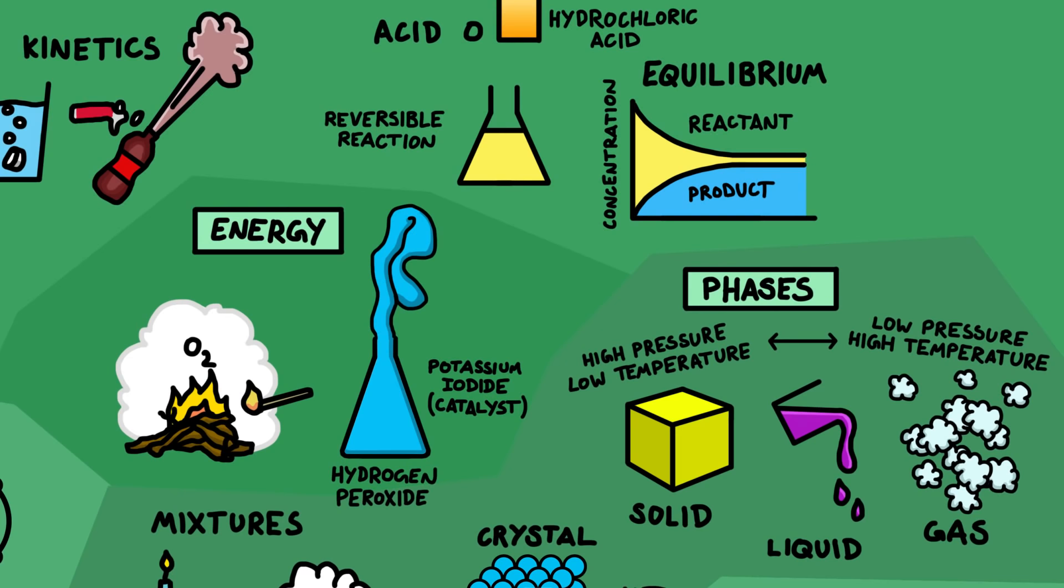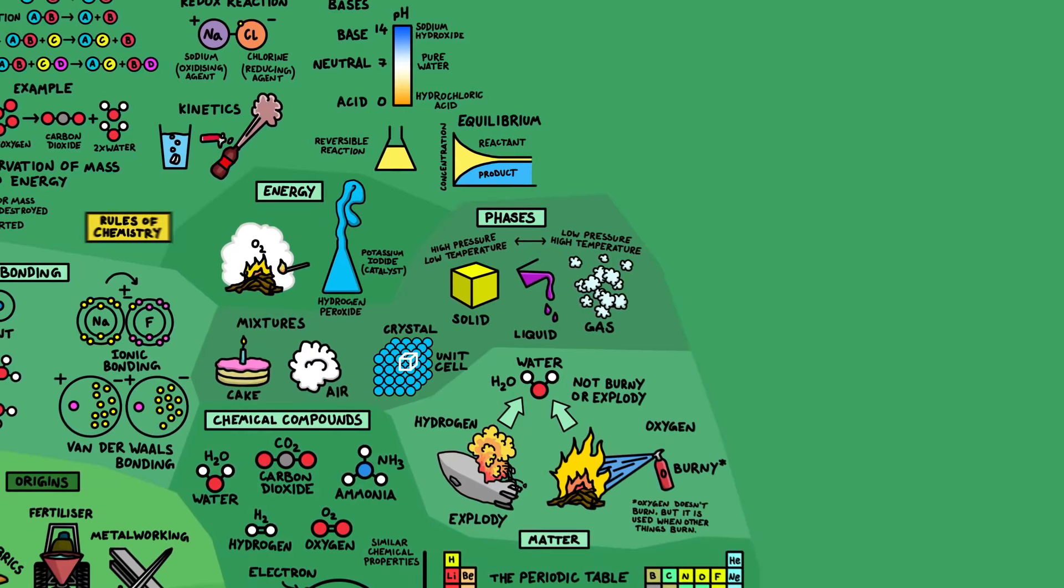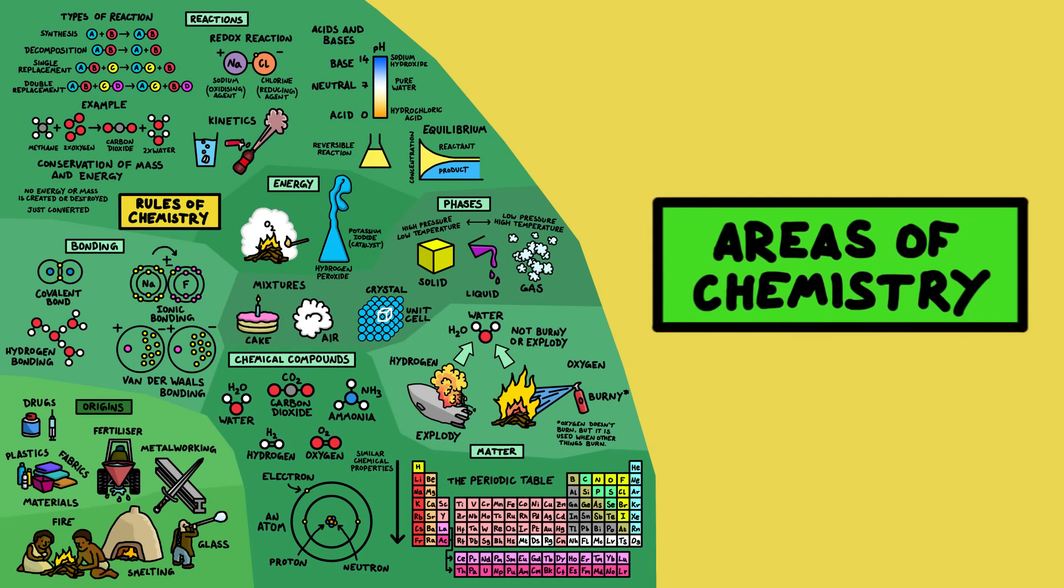So those are the basics of chemistry. Research in chemistry looks at how these rules apply in different chemical systems. So now I'm going to move on to look at the different fields in chemistry.